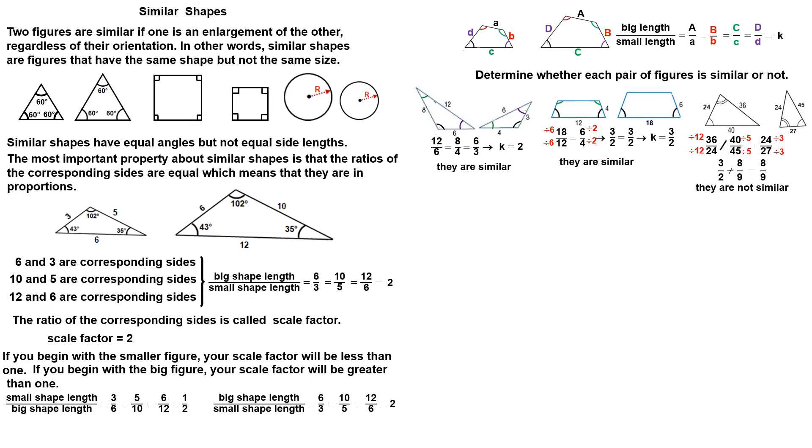When two shapes are similar, the proportionality of corresponding sides can be used to find the length of an unknown side. We can write that two shapes are similar using the correct mathematical symbol. The symbol for is similar to is a little squiggly line called a tilde.